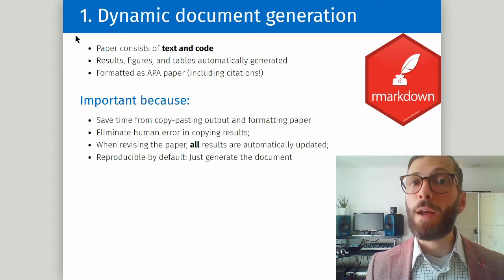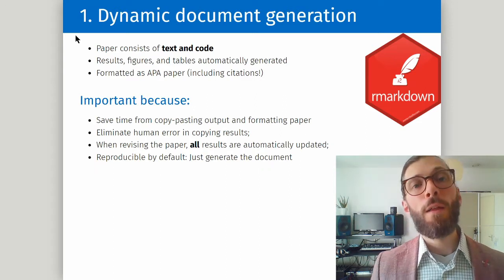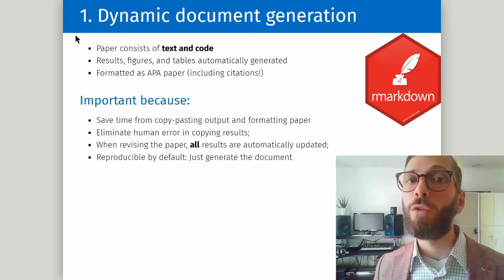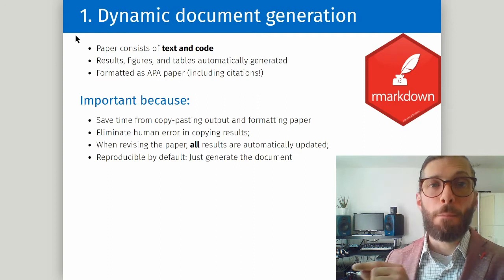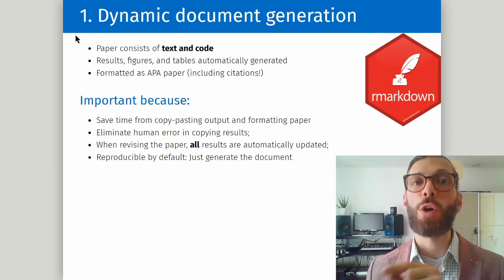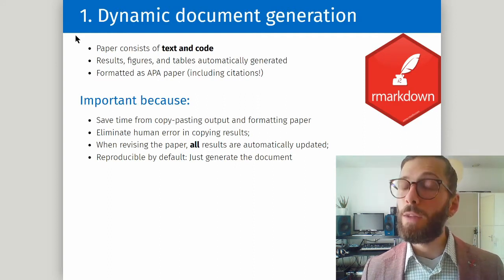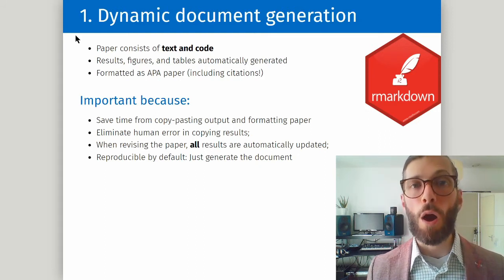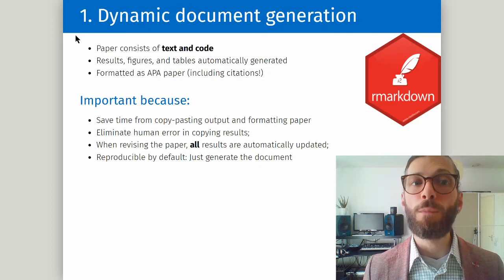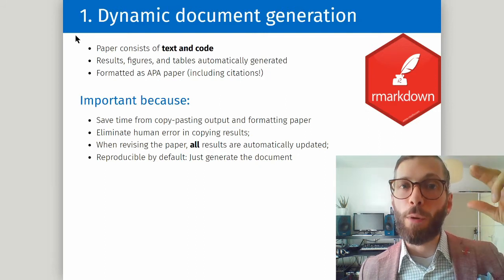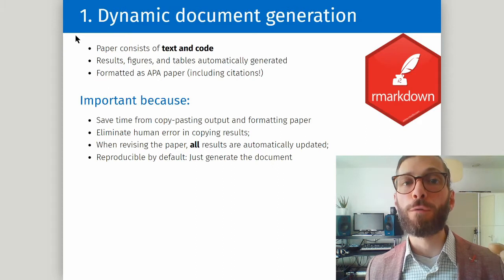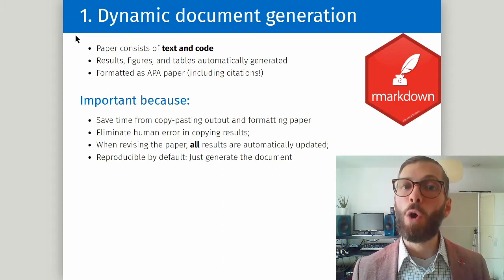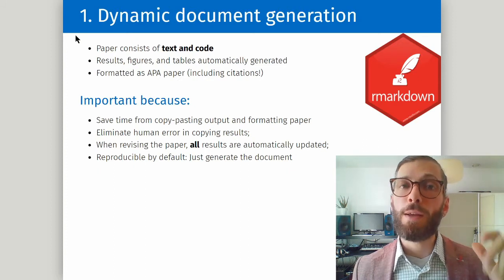First, let me define dynamic document generation. The old way of working consists of writing a paper in Word, doing analyses in SPSS, and then manually copy-pasting your results into the paper. This is no longer necessary. When you use dynamic document generation — for example our users would use R Markdown — you write a single paper that contains both the text and the code for your analyses. This means that results, figures and tables can be automatically generated and placed in the manuscript.